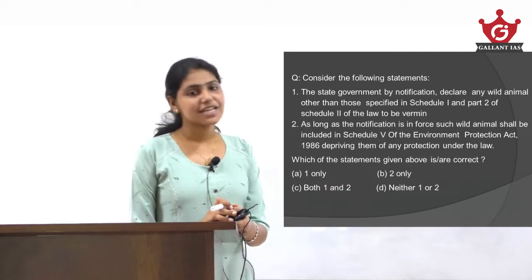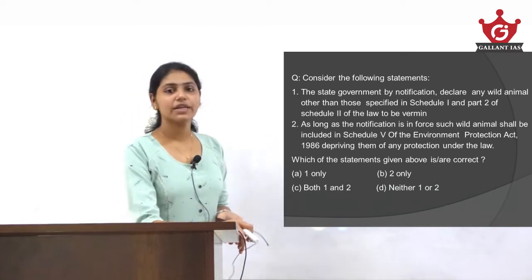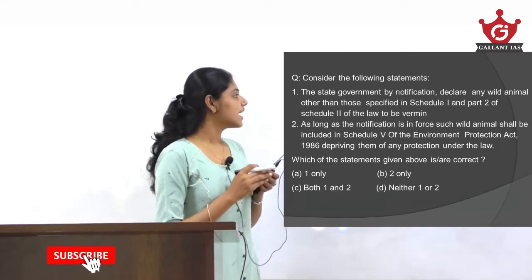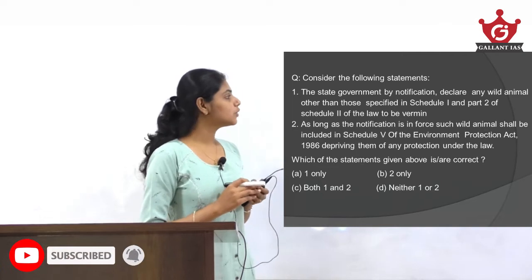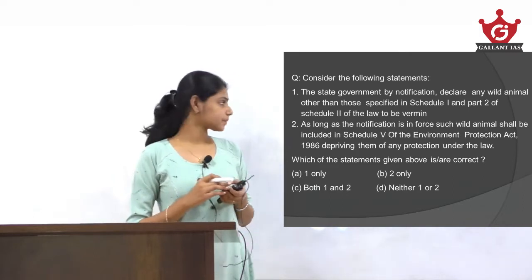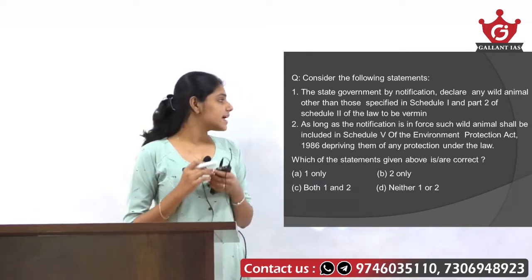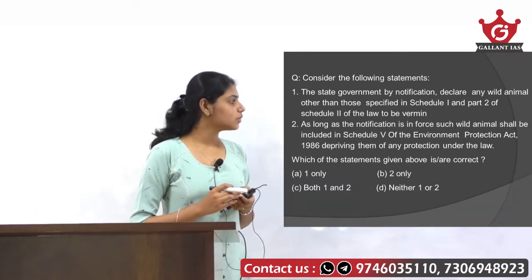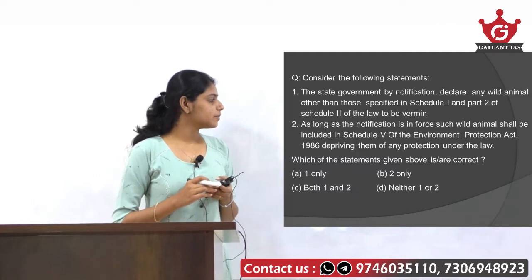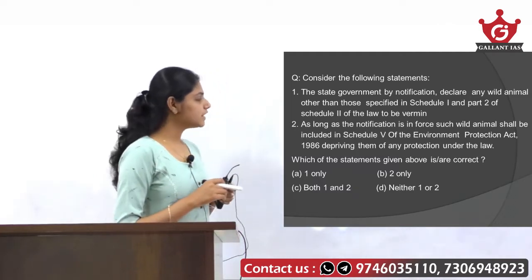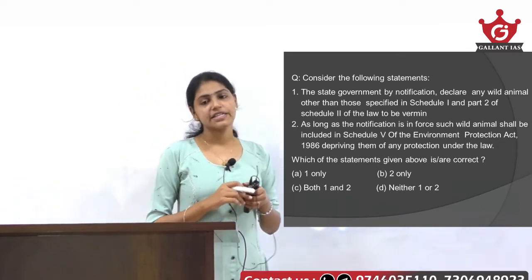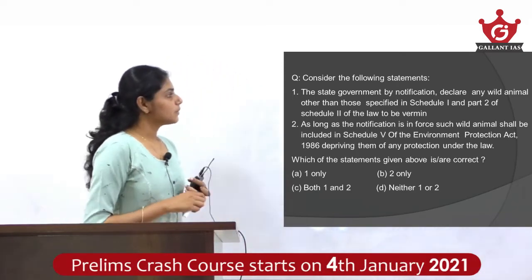Let's solve a question. Consider the following statements: Statement 1 — the state government by notification declare any wild animal other than those specified in Schedule 1 and Part 2 of Schedule 2 of the law to be vermin. Statement 2 — as long as the notification is in force, such wild animals shall be included in Schedule 5 of the Environment Protection Act 1986, depriving them of any protection under the law. Which of these statements is or are correct?